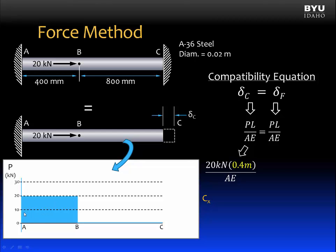If we plot the internal axial force, P, from A to C, we will get a diagram that looks like this. From A to B, there is an internal force of 20 kilonewtons. And it is feeling tension, so that's going to be a positive 20 kilonewtons. At point B, all the way to point C, there are no other external loads applied. So the internal force is zero.